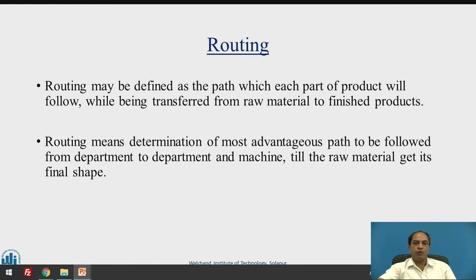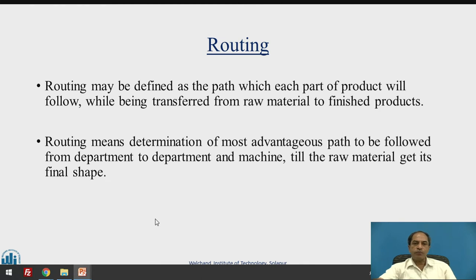Routing gives you the idea of how the entire process flow will be. While there can be a number of alternative process flows and alternative routes, our major job is determination of the most advantageous path to be followed from department to department and machine to machine, until the raw material gets its final shape or specifications. The most advantageous path optimizes resources in terms of machines, material, or manpower. It is not necessarily the shortest path — it can be various combinations of resources to get the most economical route, while still ensuring feasibility and on-time delivery to the customer.